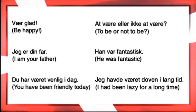'Jeg havde været doven i lang tid.' This is what we call 'førdatid' — past perfect. 'I had been lazy for a long time.' This is when you're already in the past, and before that, something had already been going on or already happened — which is why we call it 'førdatid,' like the pre-past. The thing that happened before the past you're already talking about. It's very important to know the difference between 'har været' and 'havde været' — 'you have been' or 'I had been.'